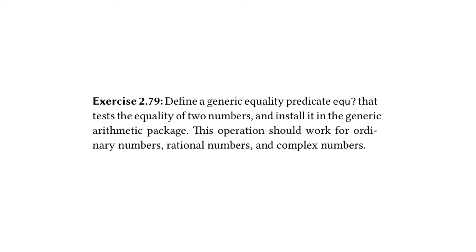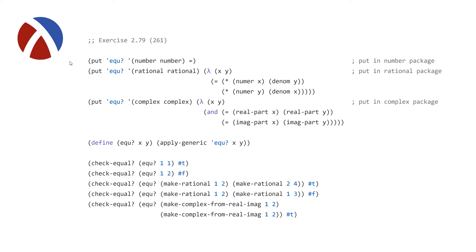Moving on to exercise 2.79: define a generic equality procedure equ? that tests the equality of two numbers and install it in the generic arithmetic package. This operation should work for ordinary numbers, rational numbers, and complex numbers. This question asks us to add an equ? procedure similar to add, sub, mul, and div. Importantly, these implementations can't be standalone — they need to be placed inside the actual packages themselves.